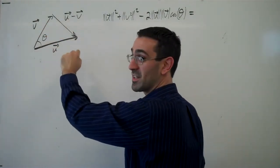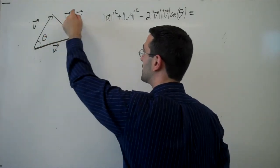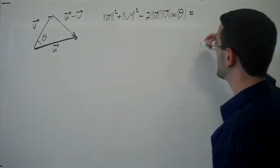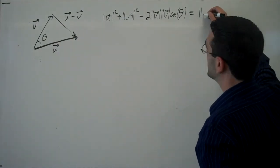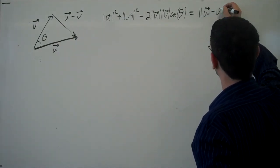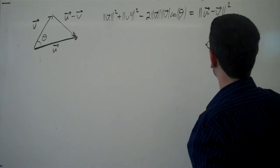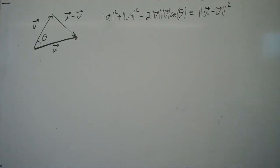a squared plus v squared minus 2ab cosine angle between is equal to the side opposite squared. So magnitude of u minus v squared.